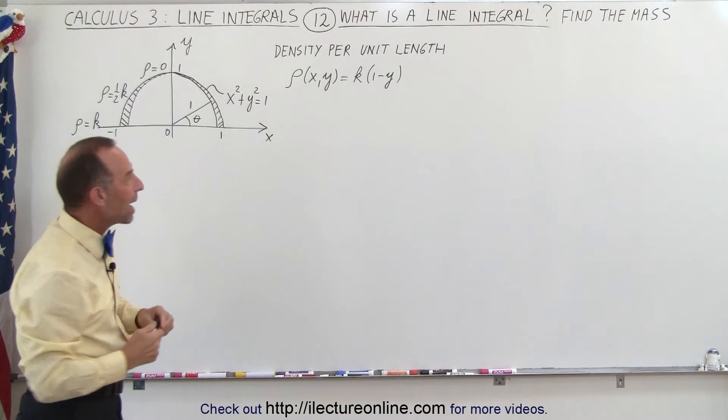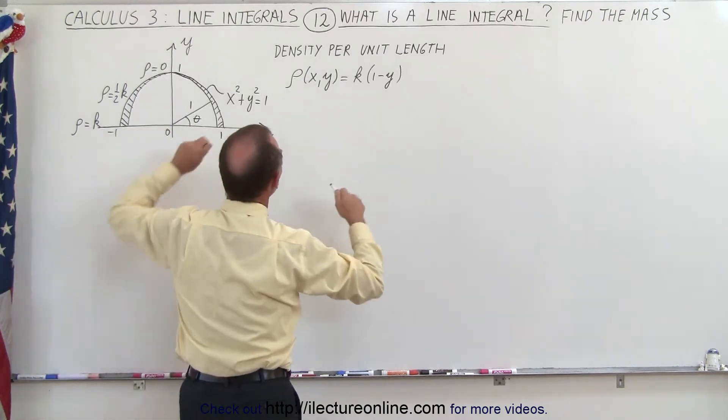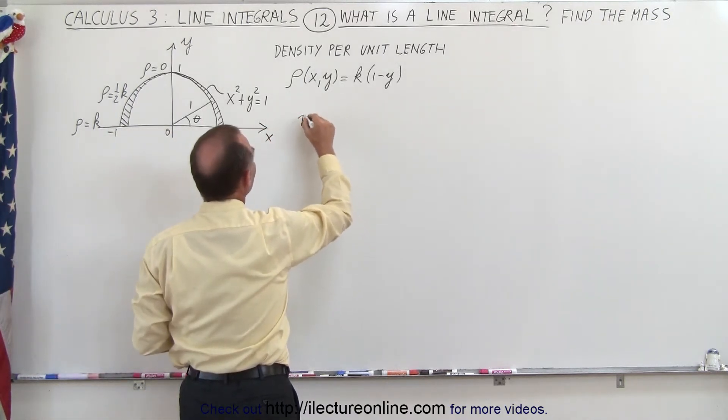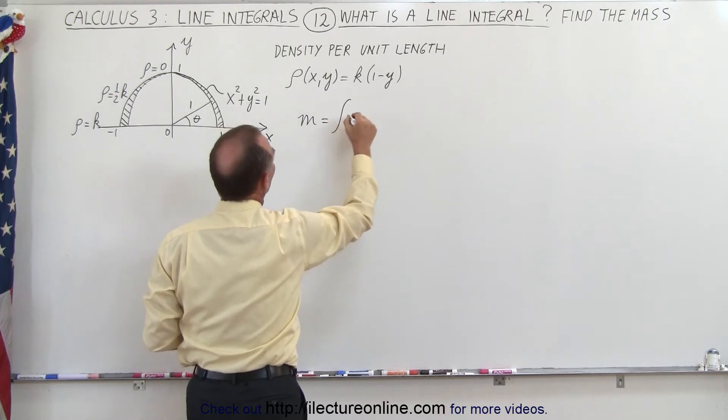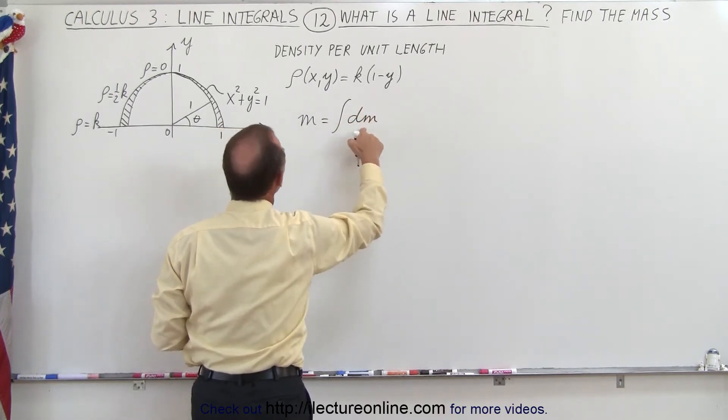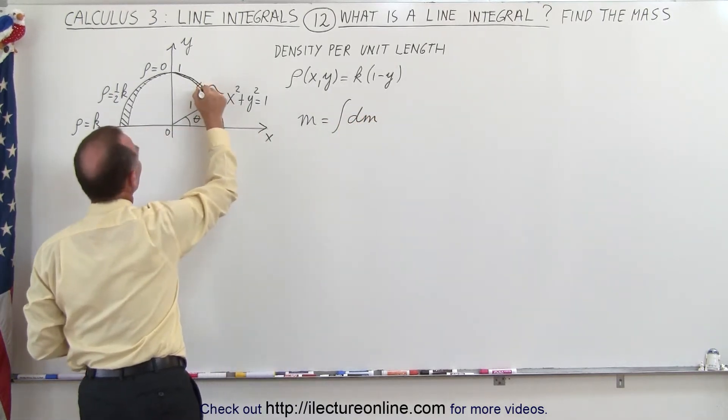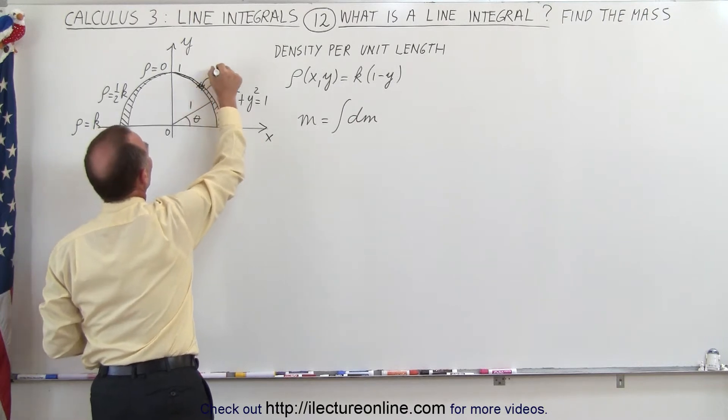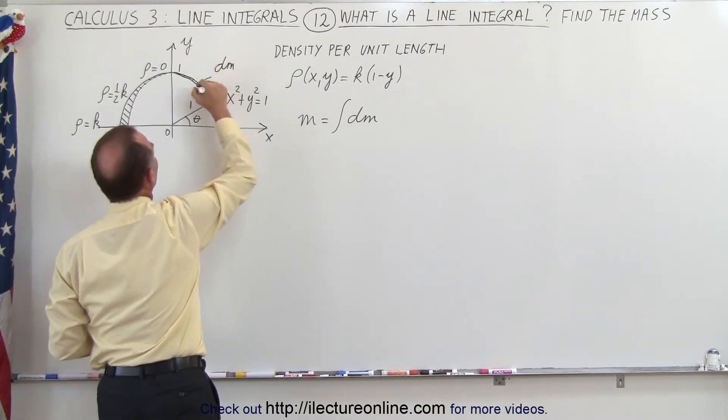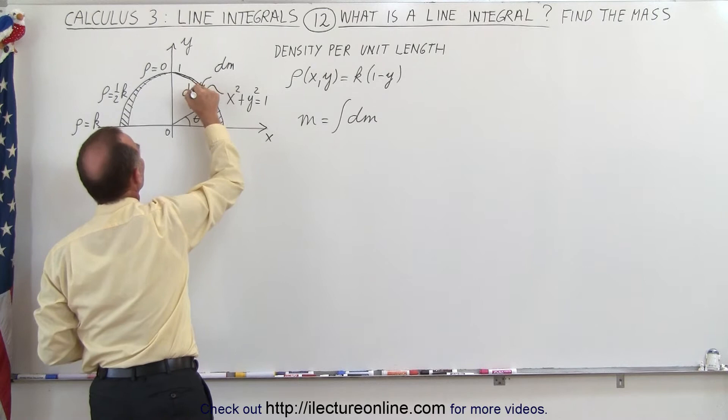So if we're going to find the mass, the way we can figure that out is that the mass is going to be the integral of small little pieces of mass, small little dm. So if we take a small little region like that and we call that dm, the length of that is going to be equal to ds.